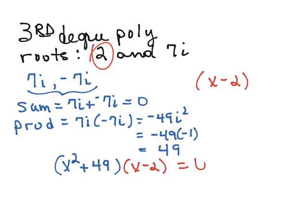So we're going to multiply this factor, x minus 2, times x squared plus 49 to get our final answer. So x squared times x is x cubed, x squared times negative 2x is negative 2x squared, 49 times x is 49x, and 49 times negative 2 is negative 98. And we get our answer: x cubed minus 2x squared plus 49x minus 98 equals 0.